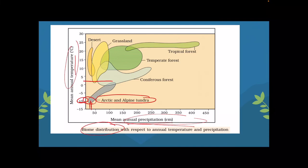Where precipitation is very low and temperature is very high, we find desert. You can see this in the diagram — comparing desert with forest, desert has very little rainfall and very high temperature. In contrast, tropical forest has very high precipitation, high temperature, and high humidity. Biome is affected by both temperature and precipitation.